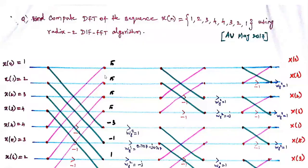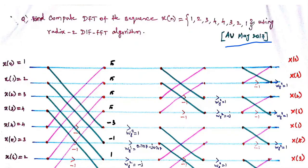Welcome to my channel. Today we are going to solve one important problem — a May 2017 Anna University question. Compute the DFT of the sequence x(n) = 1, 2, 3, 4, 4, 3, 2, 1 using the radix-2 DIF FFT algorithm.